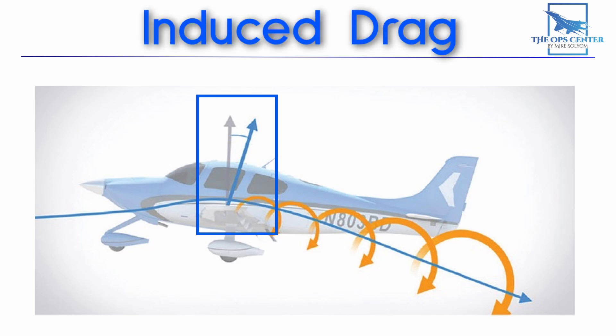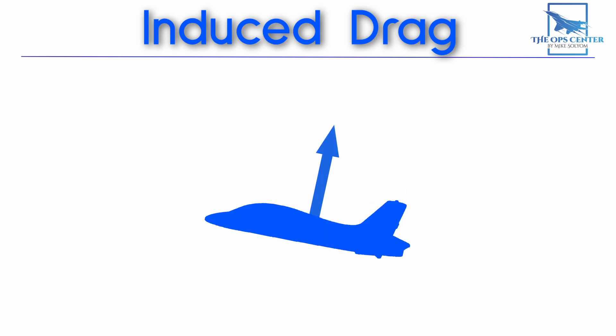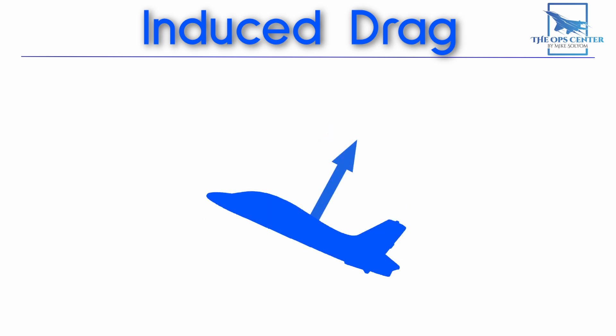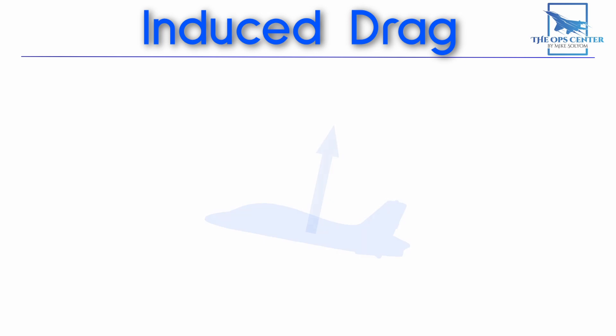There are a couple of things to remember about induced drag. First, it's dependent on angle of attack — induced drag goes up with AOA, because rotating the aircraft backward away from the direction of travel also rotates the lift vector backwards, causing lift to fight against thrust. So at low speeds where you need more AOA to maintain lift, you'll see more induced drag. When flying faster, you need less AOA for the same lift, so you'll see less induced drag.